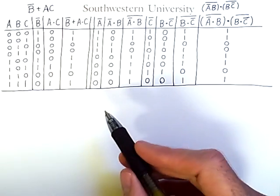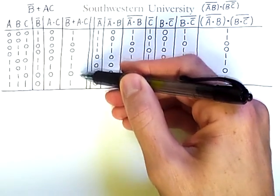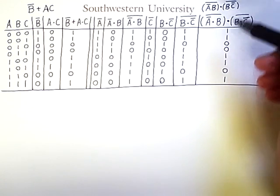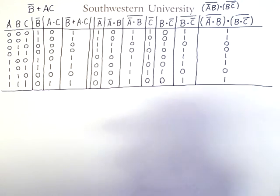You can confirm this by noticing that this column, which corresponds to this expression, and this column, which corresponds to this expression, have the same values. You should pause the video and make sure that it makes sense to you and that you yourself could create this truth table if you had to.